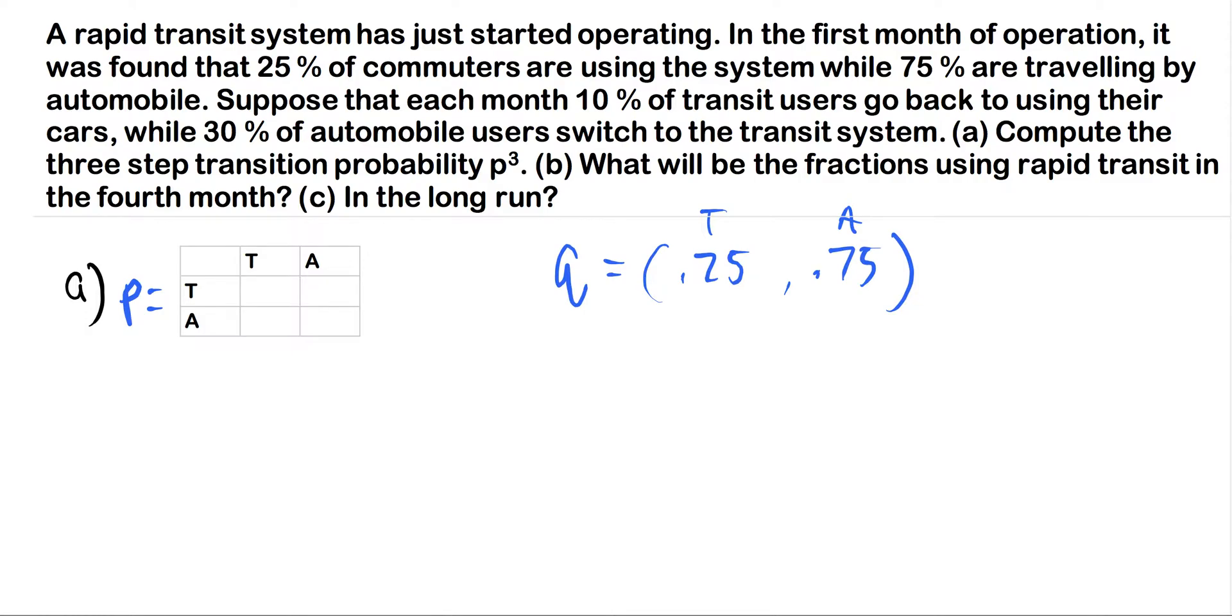So if we go back over here to our transition matrix P, I've labeled this the same thing. Here's our starting state. Either they're currently using the transit system or they're currently using their automobile and then they're going to switch either way. But like I said, all of the information is already given to us. So it says here, suppose that each month, 10% of the transit users go back to using their cars. So if we are starting at using the transit and then in the next state they're going to start using their automobile, you've got 10% here. Now remember these rows have to add up to one. So one minus 10% is going to be 90%. So here's going to go 0.9.